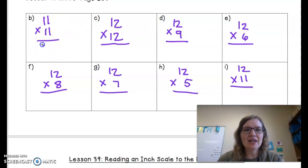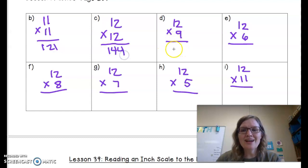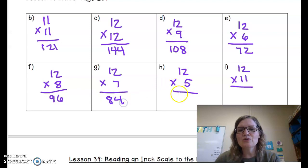11 times 11 is 121. 12 times 12 is 144. 12 times 9 is 108. 12 times 6 is 72. 12 times 8 is 96. 12 times 7 is 84. 12 times 5 is 60. And 12 times 11 is 132.